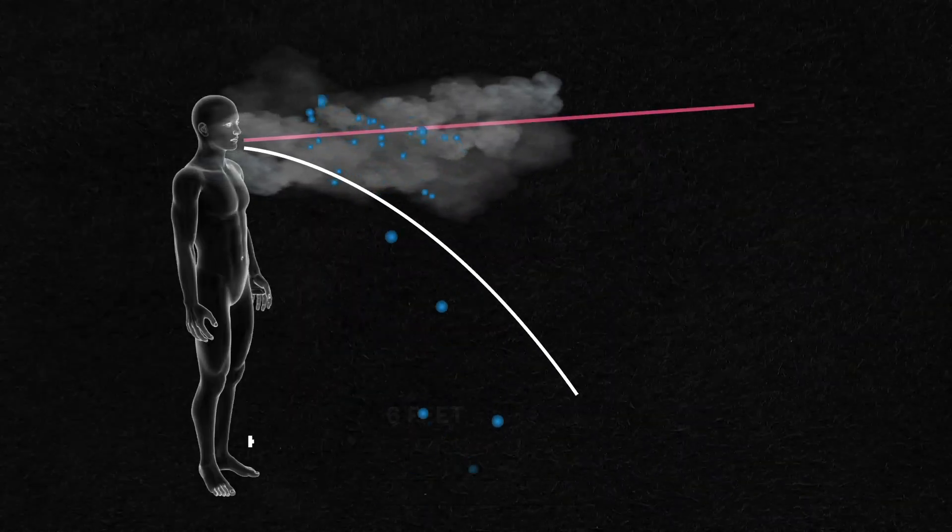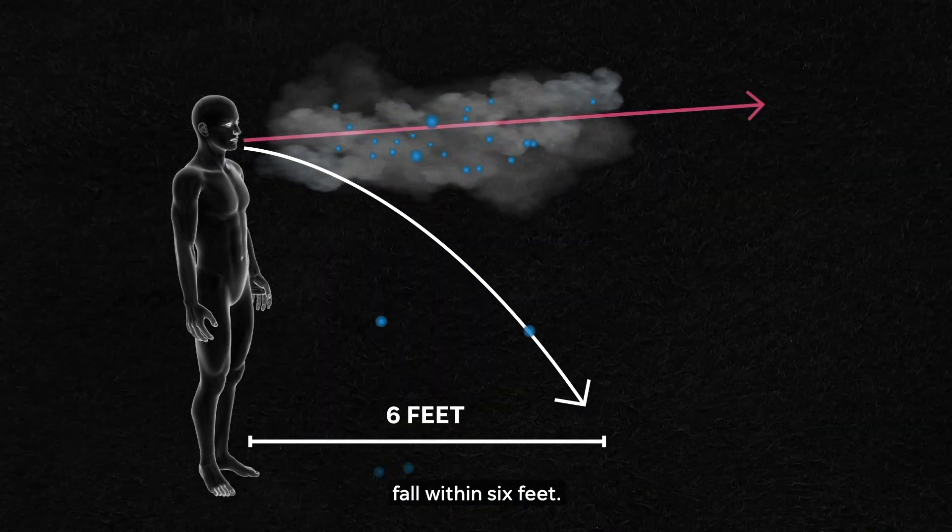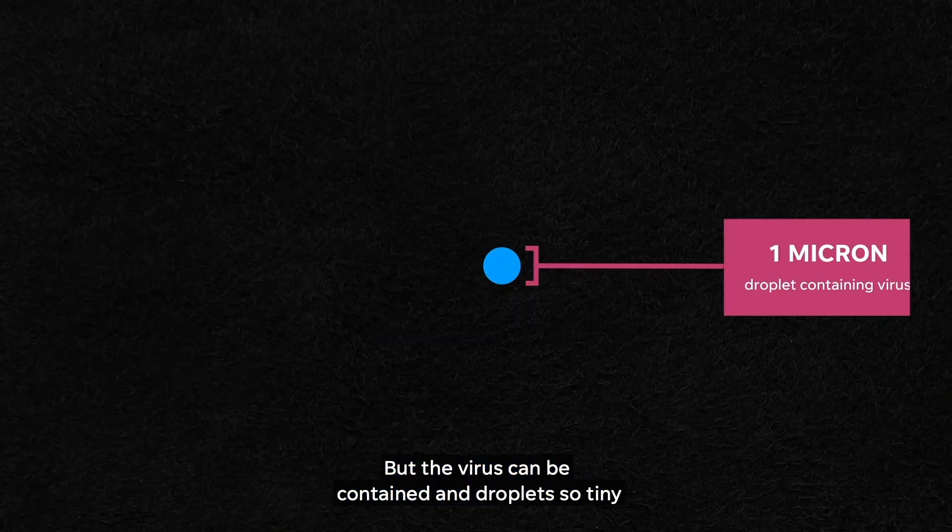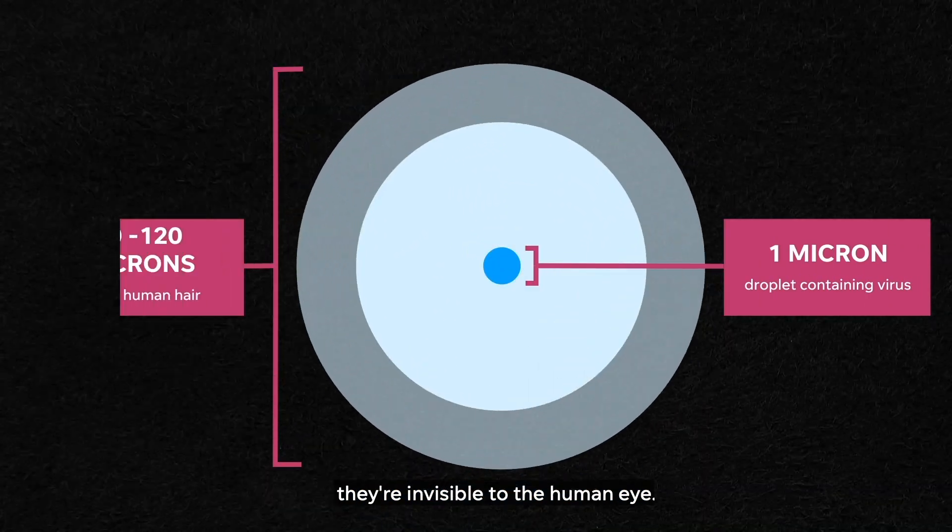As the cloud moves, the larger, more visible droplets fall within six feet. But the virus can be contained in droplets so tiny they are invisible to the human eye.